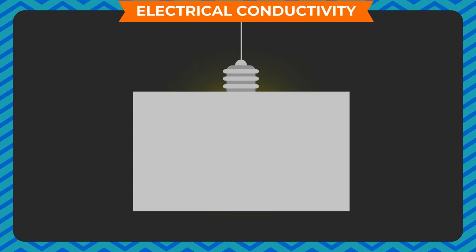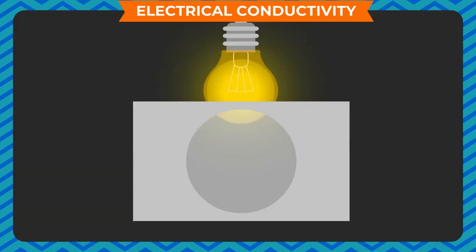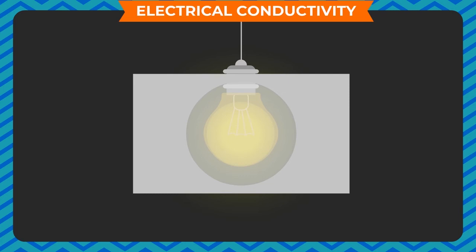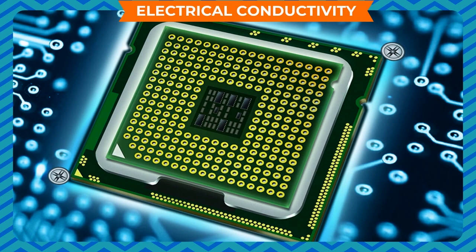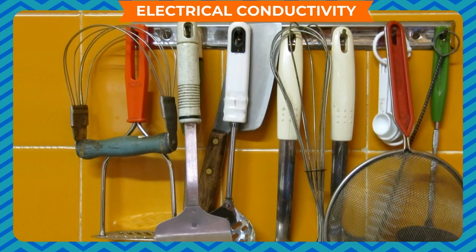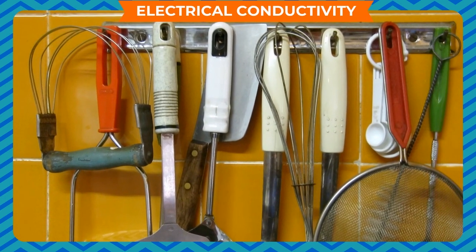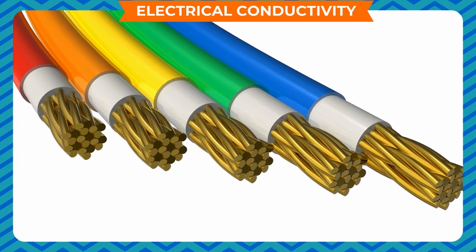If you look at a lighted bulb through a sheet of paper, the bulb is not visible because paper is opaque. If you pour two drops of kerosene oil on the paper and look through that portion, some light becomes visible — because oiled paper is translucent. Some materials allow electrons to pass through them only at high temperatures — these are called semiconductors, examples being silicon and germanium. Good conductors of electricity are also good conductors of heat — that is why the handles of utensils are made of plastic, and electric wires are enclosed within a plastic layer.